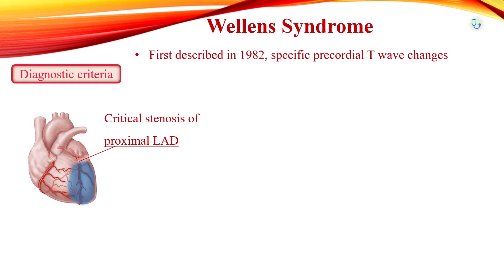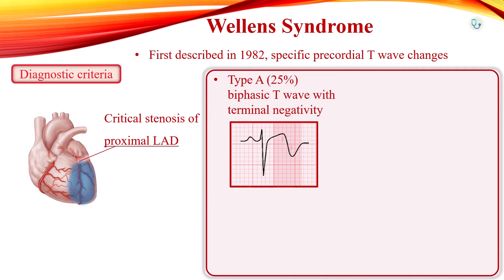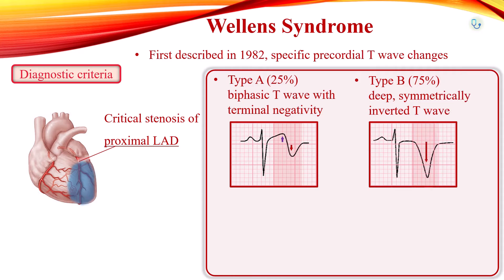There are two patterns of T-wave abnormality in Wellens syndrome. In type A, T-waves are biphasic, with initial positivity and terminal negativity, seen in approximately 25% of cases. In type B, T-waves are deeply and symmetrically inverted, seen in 75% of cases. T-wave changes can be observed mainly in V2 and V3, and may extend from V1 to V6.